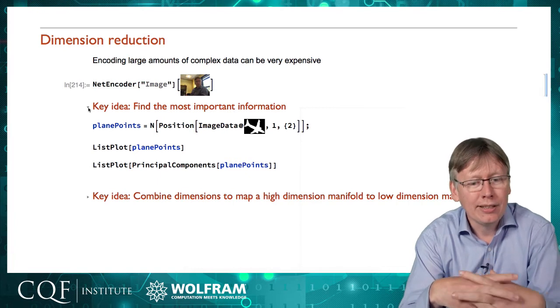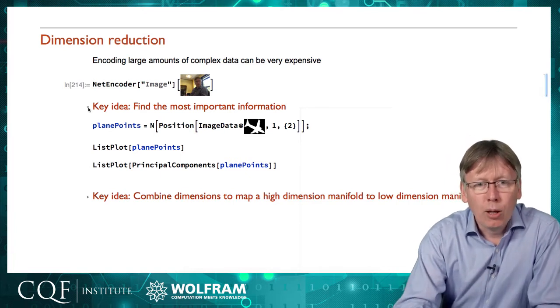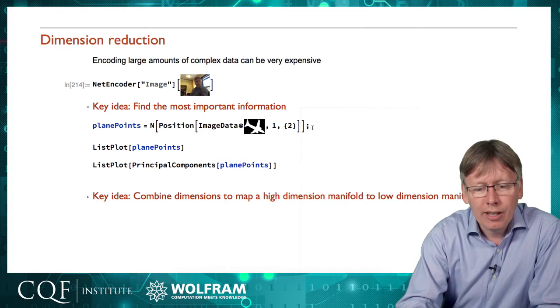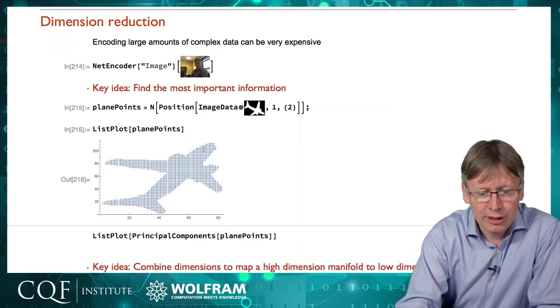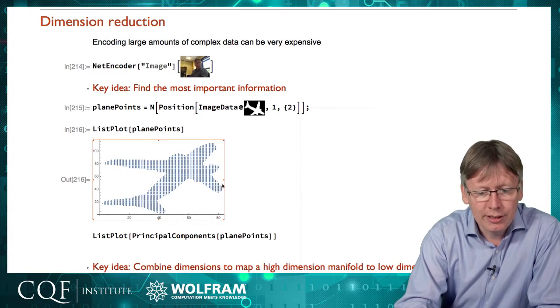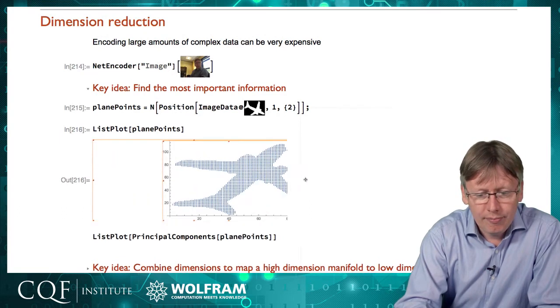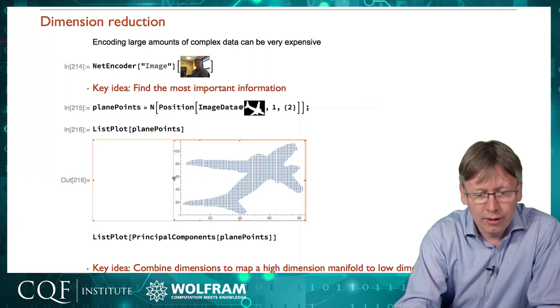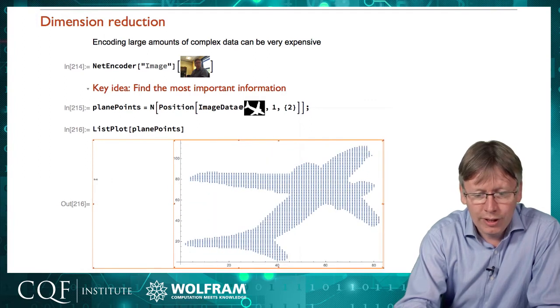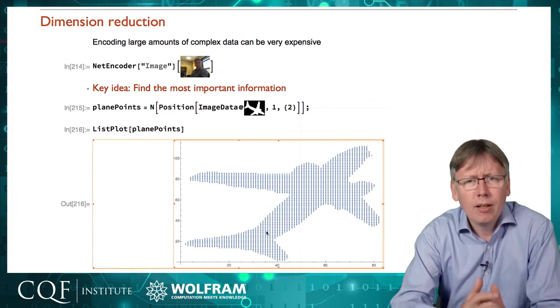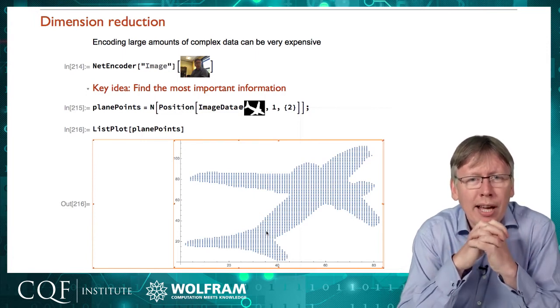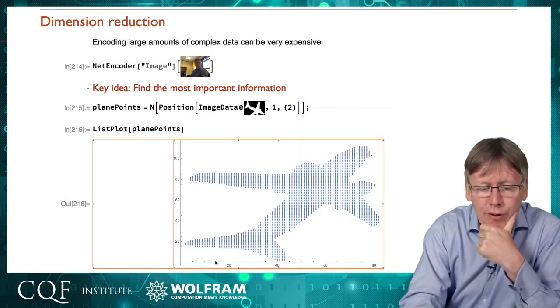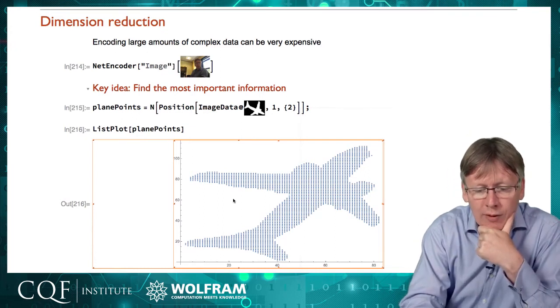The key thing here is to try and reduce the data set down to less data, but data that's important. To give an example of the kind of process that goes on here, I'm just generating some random data here related to a picture. I've got some x, y points, and I can plot them on a graph here, and pose the question of, if I didn't have enough room to store both x and y, which one would you keep?